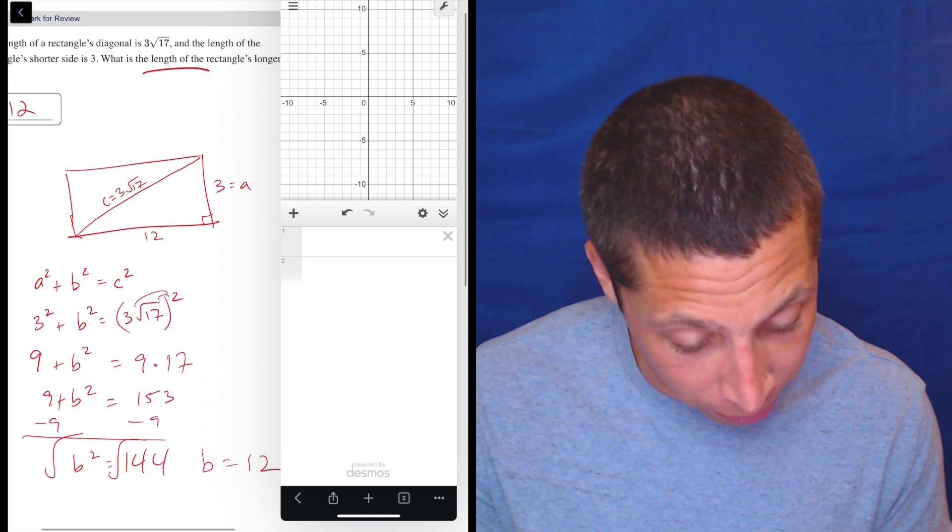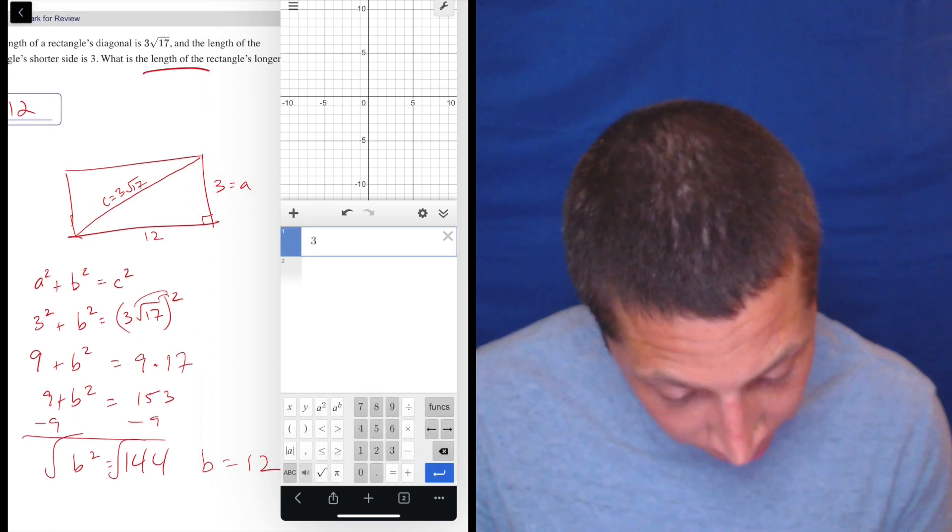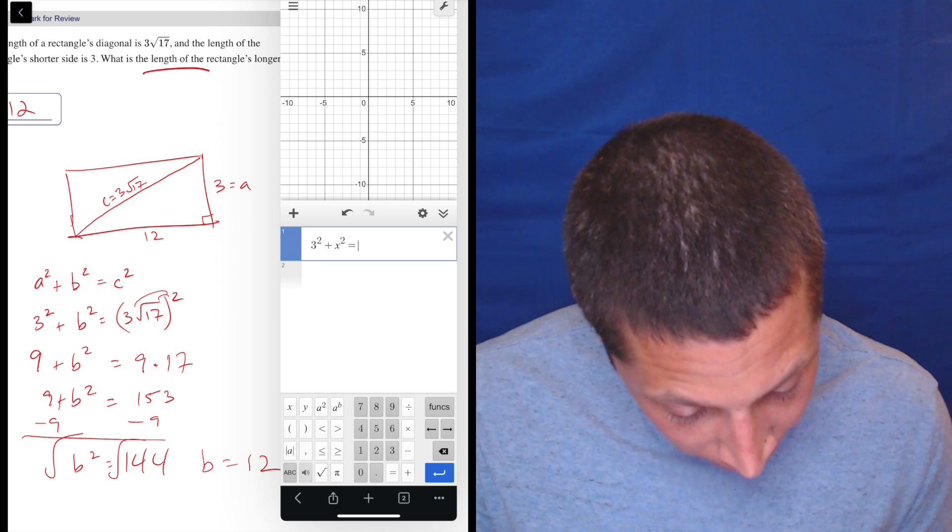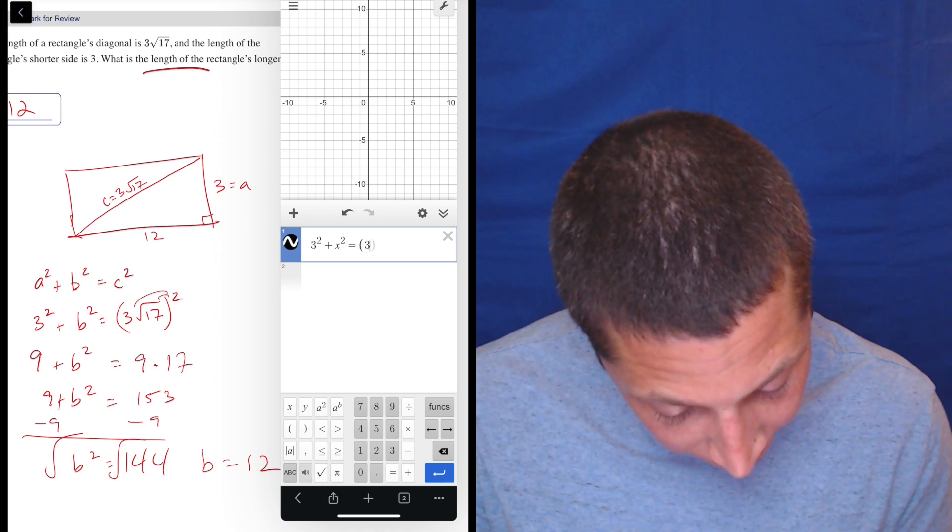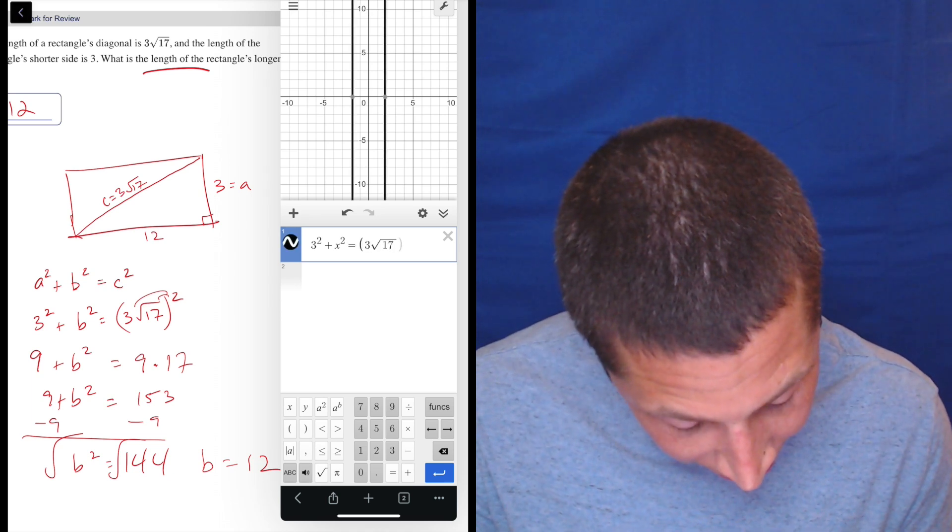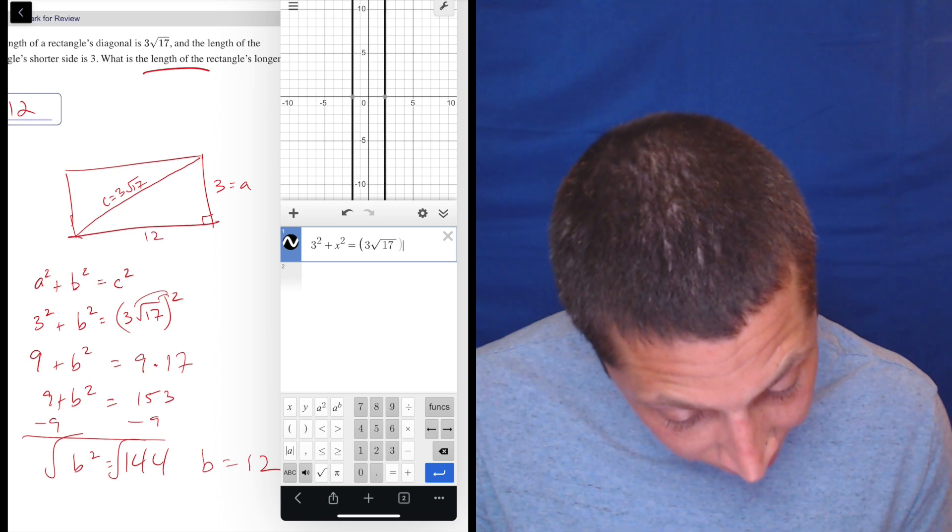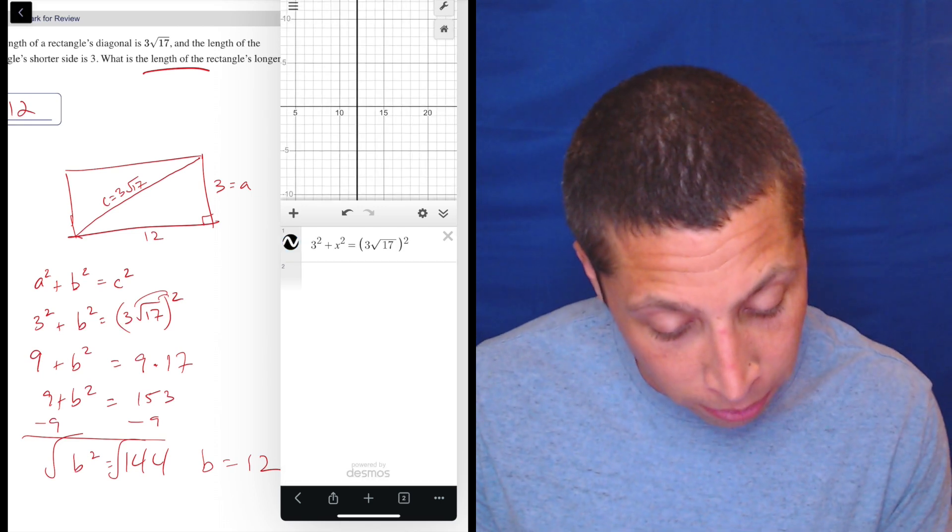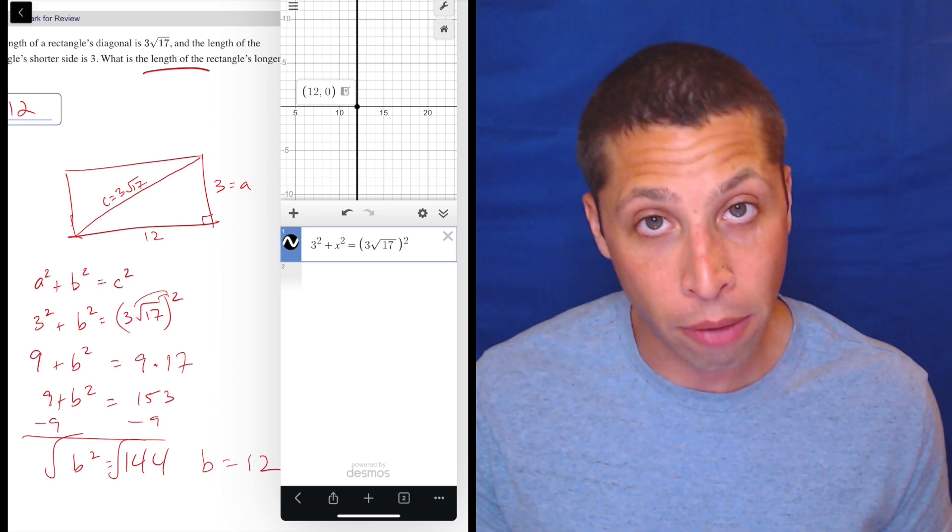Right, here's what I would have done: I would have done 3² + x² = (3√17)². Go out of those parentheses. You've got to make sure you're squaring the right thing, though. And you see, it all disappeared, but if I move over, there it is, right? x = 12.